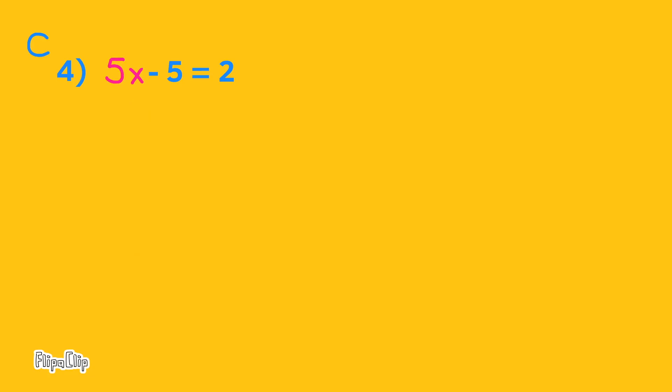I need to get rid of the negative 5, so I'm going to add 5 to the left side, and then I'm going to add 5 to the right side. Now the equation reads 5x equals 7.